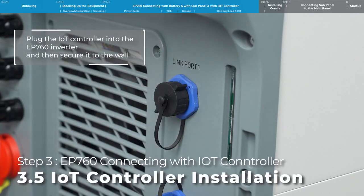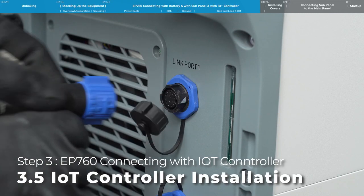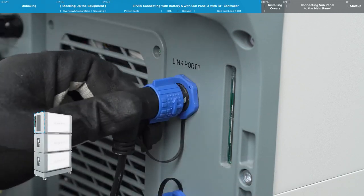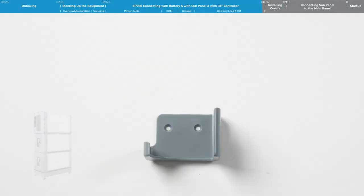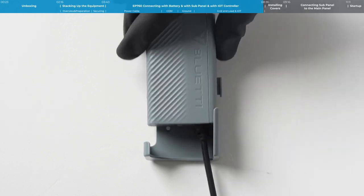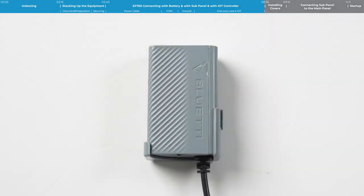Step 3: Connect the IoT controller. Plug the controller into the inverter and then secure it to the wall.